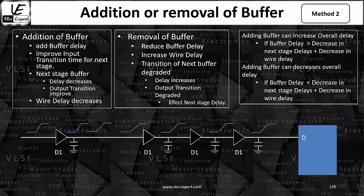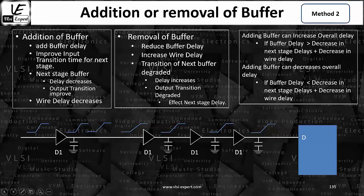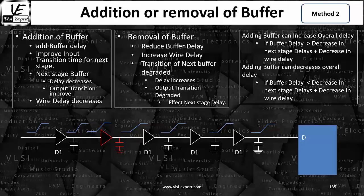So here is the scenario. In this particular scenario, you can see what are the transition times and what are the delays. Every buffer has a certain D1 delay, and there is a certain capacitance as well. Now what I'm going to do — I'm going to add a buffer here. So I just added a buffer. The moment you add a buffer, what is going to happen with the transition time?